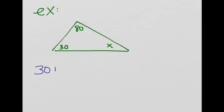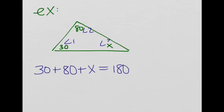So we're going to write our equation. So 30 plus 80 plus x has to equal 180, right? Because this is like angle 1, this is like angle 2, and this is like angle 3.